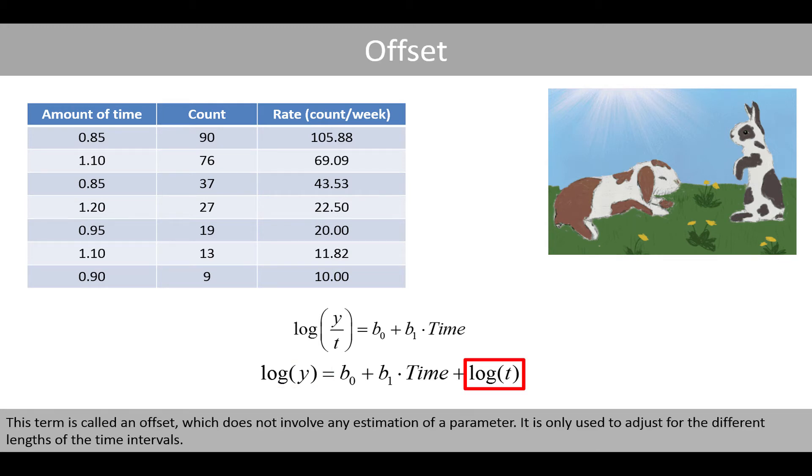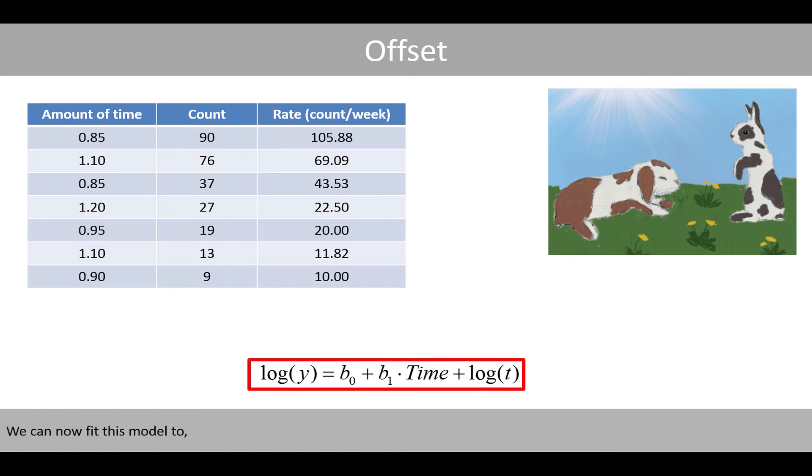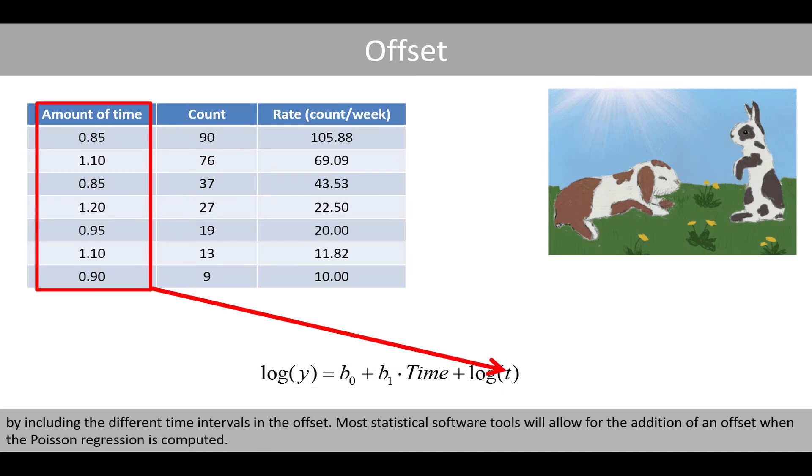This term is called an offset, which does not involve an estimation of a parameter. It is only used to adjust for the different lengths of the time intervals. We can now fit this model to our count data by including the different time intervals in the offset. Most statistical software tools will allow for the addition of an offset when the Poisson regression is computed.